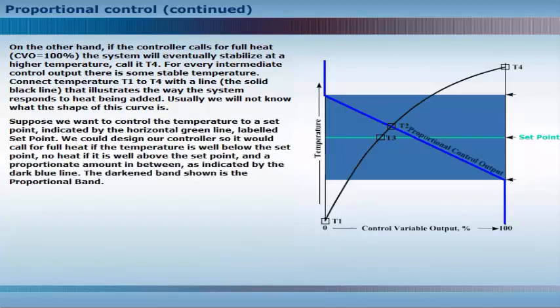Suppose we want to control the temperature to a set point, indicated by the horizontal green line, labeled set point. We could design our controller so it would call for full heat if the temperature is well below the set point, no heat if it is well above the set point, and a proportionate amount in between, as indicated by the dark blue line. The darkened band shown is the proportional band.